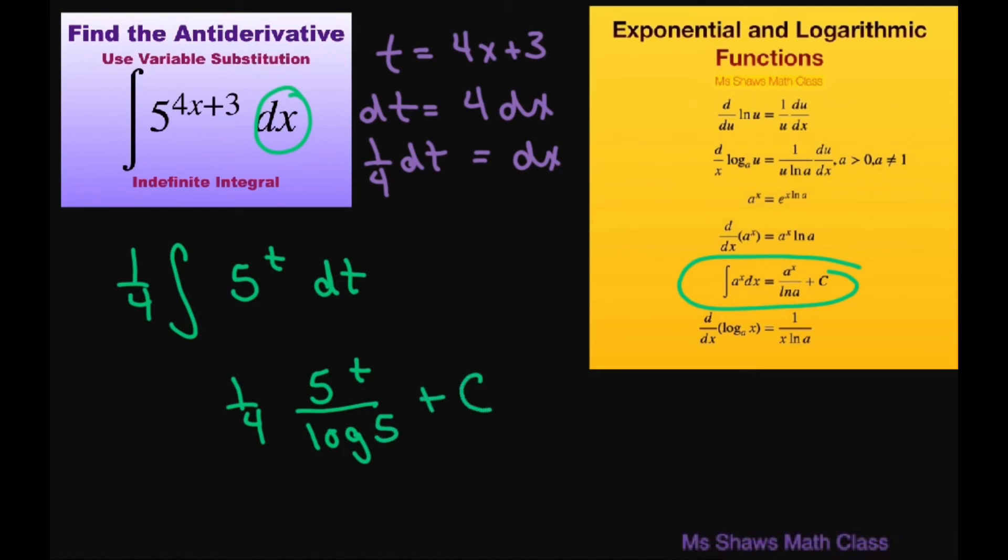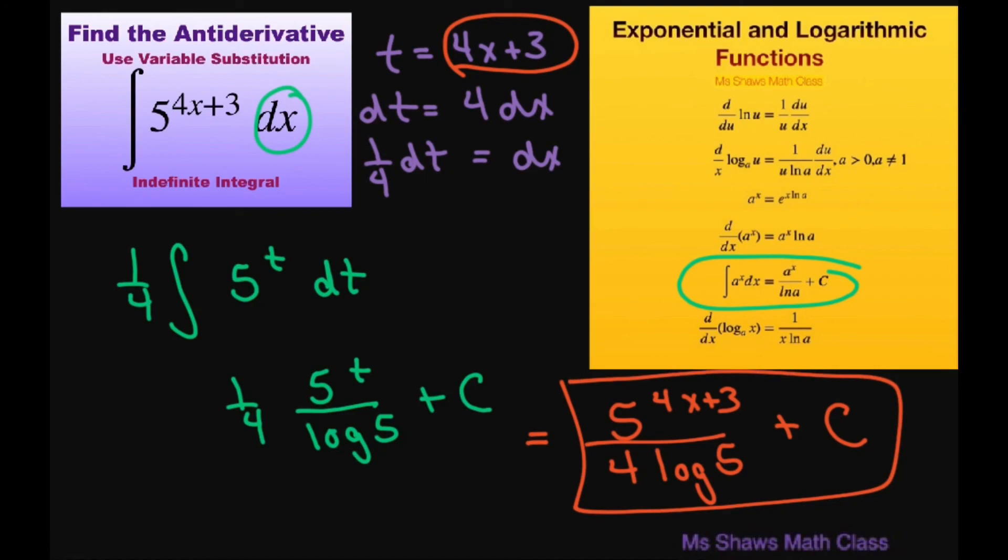And then all you have to do is substitute back in your t. So this is going to end up being 5 to the power of 4x plus 3 divided by 4 times log 5 plus c. And that's it. Thank you. Have a nice day. Bye bye.